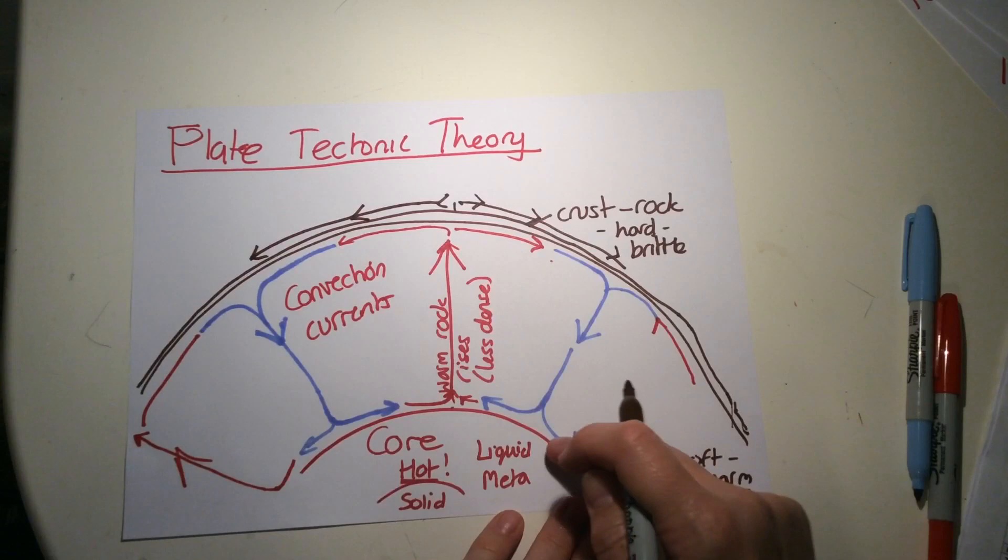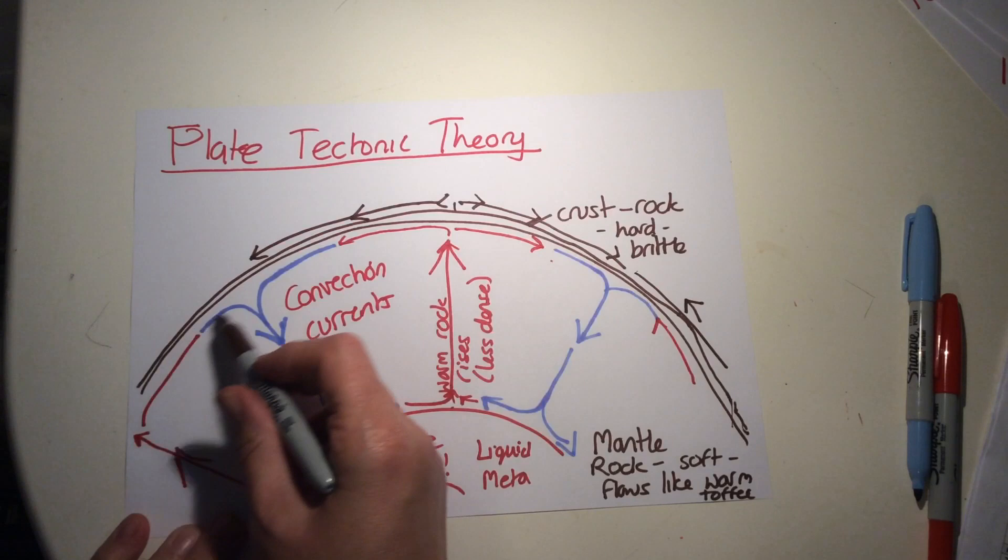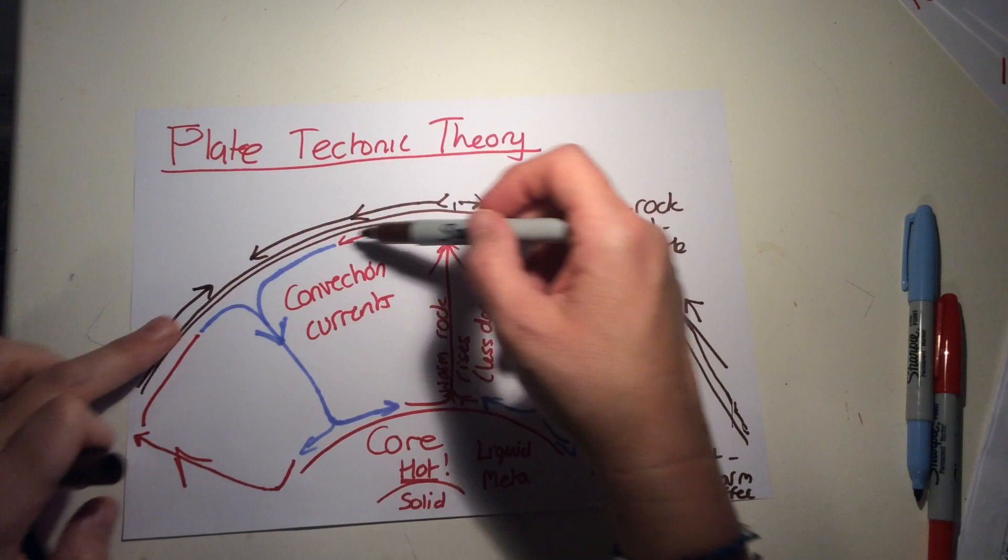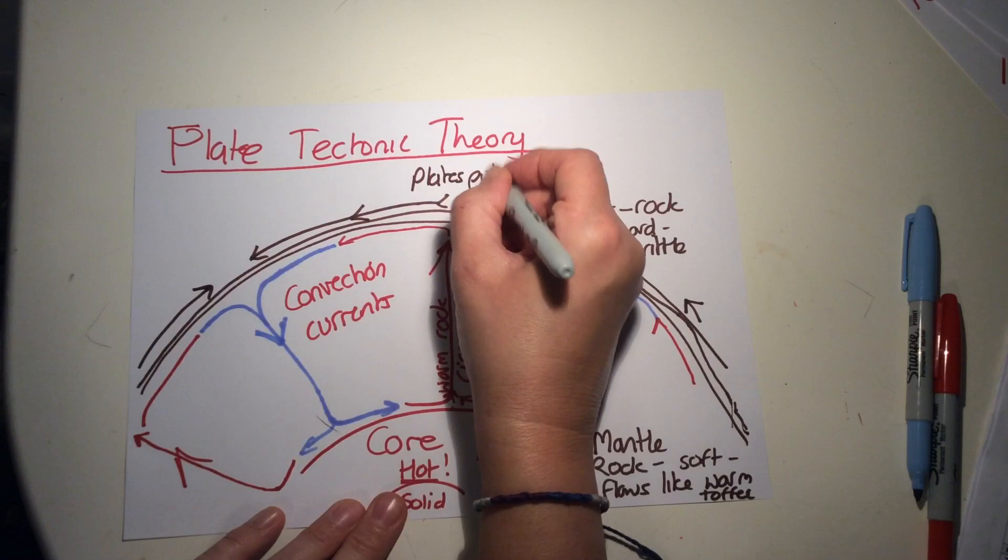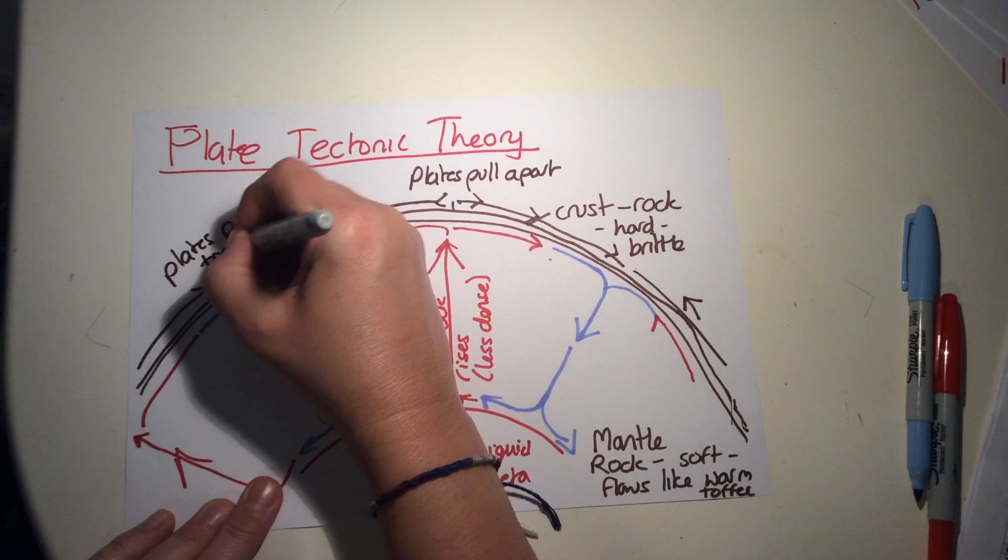The area above it will be moving in that direction, and this area here is moving in that direction. If we think about the edges where these different convection currents meet, we have places where the plates pull apart and places where the plates push together.